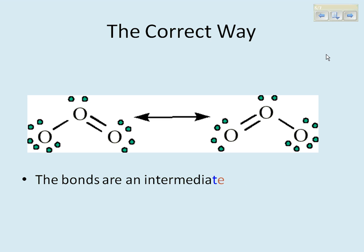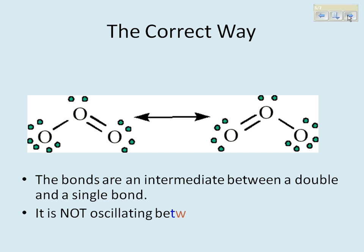So the correct way is to show both structures with a double-sided arrow in between them. And that indicates that the bonds are an intermediate between a double and a single bond. It is not an oscillating between a double and a single bond. It is a structure that is stable, and it's somewhere in between a double and a single bond.